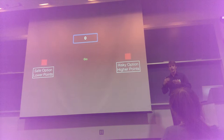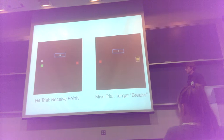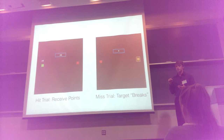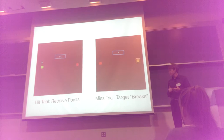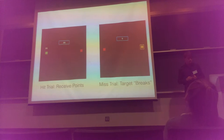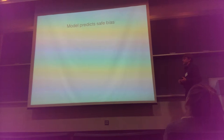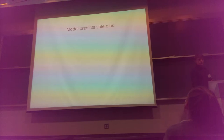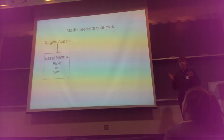Every time they make a selection, they can either have a hit trial — where they receive points between 0 and 100, a positive reward — or a miss trial where the target breaks, an error in selection, and they receive no points, a negative reward. The safe target is more likely to give a hit trial, whereas the risky target is more likely to give a miss trial. Running this experiment through the model, it predicts that people will choose the safe option more — the safe target is more positively reinforced and the risky target is more negatively reinforced.